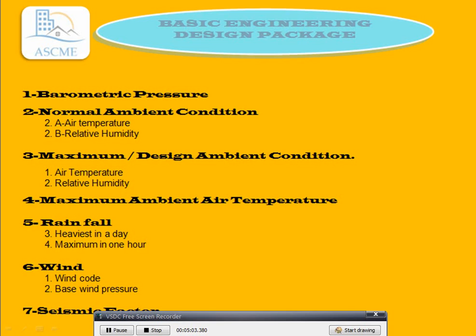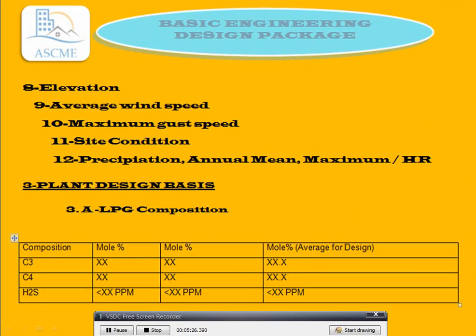Barometric pressure. Normal ambient conditions: air temperature and relative humidity. Maximum ambient conditions: air temperature and relative humidity, maximum ambient air temperature. Rainfall: heaviest in a day and maximum in one hour. Wind: wind code, basic wind pressure, and geometric factor. These are the common area data parameters to keep in mind.